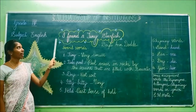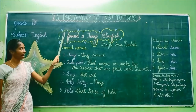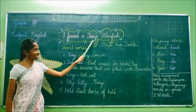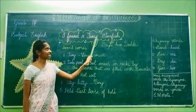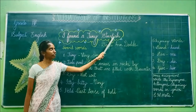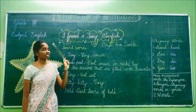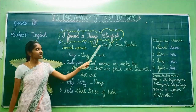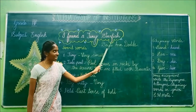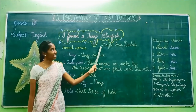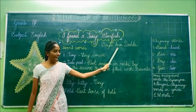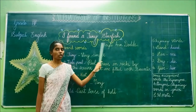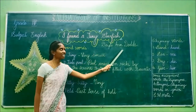What is the title of the poem? I found a tiny starfish. F-O-U-N-D found, T-I-N-Y tiny, S-T-A-R-F-I-S-H starfish. It was written by Dale and Dots. D-A-Y-L-E, and D-O-D-E-S. Who is the author of the poem? Dale and Dots.